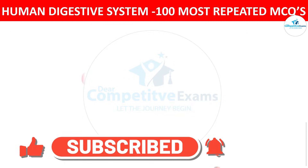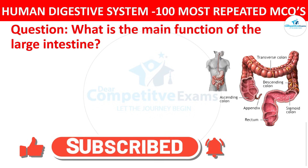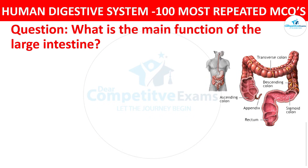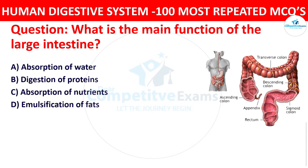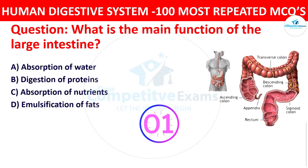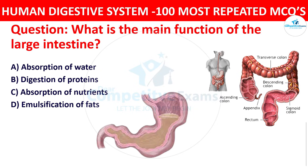Question number ten: What is the main function of the large intestine? The options are absorption of water, digestion of proteins, absorption of nutrients, or emulsification of fats. The right answer is absorption of water. The large intestine primarily absorbs water from the remaining indigestible food, forming feces.